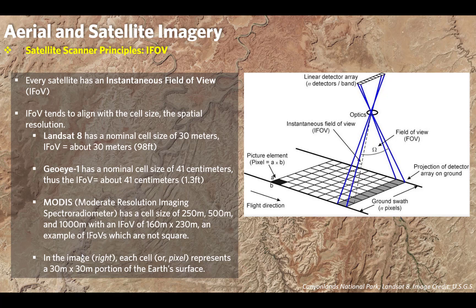The resolution also depends on the look angle. Some satellite platforms have the ability to look to the side. We have what we call a nadir view — looking perpendicular to the surface — but we can also have off-nadir view, where you tilt the sensor array to look at the surface at an angle. When you do that, you get foreshortening, requiring processing to eliminate distortion. It also increases your cell size because you're increasing the distance between the satellite and the ground.